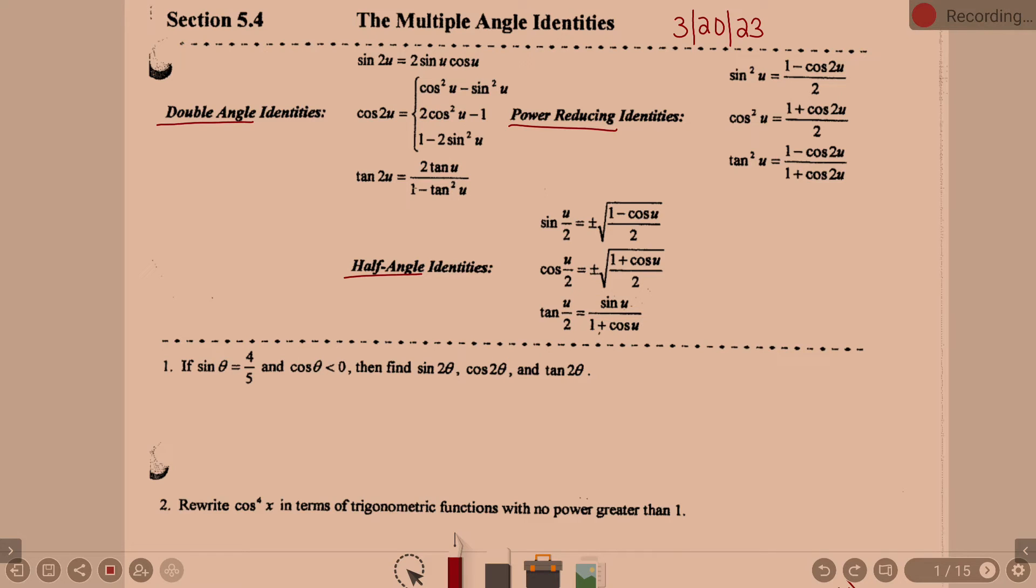In order to find these values of our double angle identities, for instance, what do we have to know to find sine of 2 theta? We're going to have to know sine of theta and cosine of theta, yes? Did they give us all that information here? No, so the first thing I'm going to have to do is we need to find just our plain basic sine, cosine, and tangent.